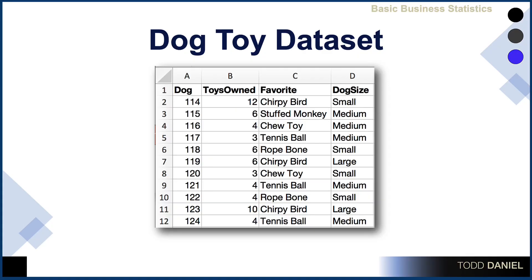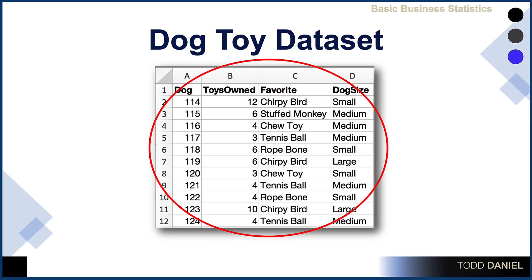This is your data set. Collectively, all of this information is the data set. This is a subset, a small portion — there will be much more to the data set than what you see here — but when you look at this collection of rows and columns and words and numbers, that is the data set.